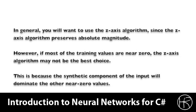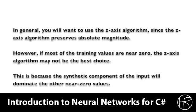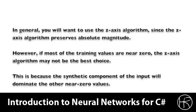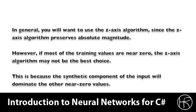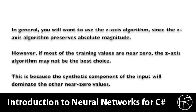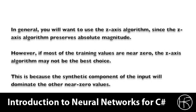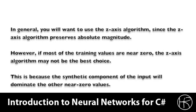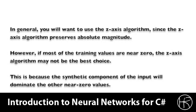You may be wondering when you want to use each of the two normalization types. In general, you'll want to use the z-axis algorithm because it preserves the absolute magnitude of the values. This allows for more accurate training. However, if most of the training values are near zero, the magnitude is not going to matter as much, and the z-algorithm might not be the best choice. It might be best to go with the more traditional multiplicative. This is because the synthetic component of the input will dominate the other near zero values when you are actually performing the training and returning the outputs from the neural network. This is a general rule of thumb that allows you to determine which of the two algorithms you might wish to use. You can also simply resort to trial and error, as is often the case with neural network programming, to see which of the two methods performs the best for the data you are using.